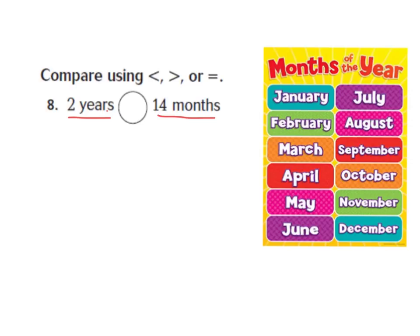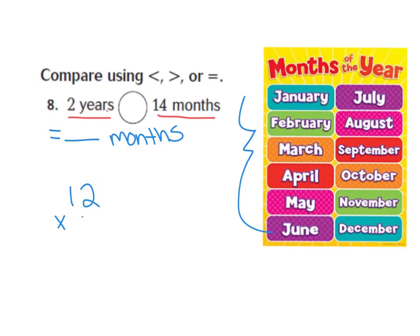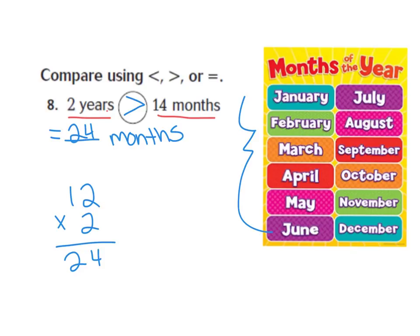I know that there are 12 months in one year, but I have two years. So I have to multiply 12 times 2, which would give me 24. So there are 24 months in two years. Now I can compare: I have 24 months and I have 14 months. I can see which one's greater. My two years is greater, so I can put my greater than symbol pointing to the two years.